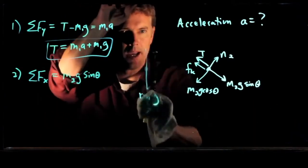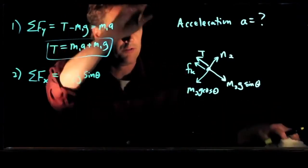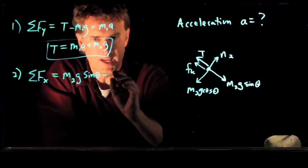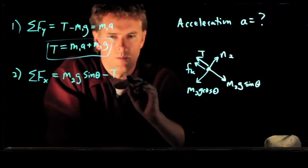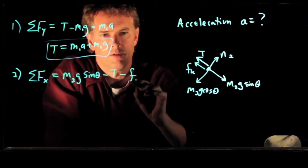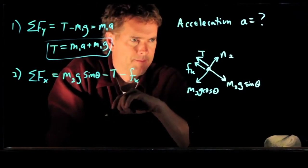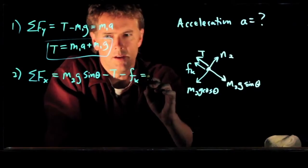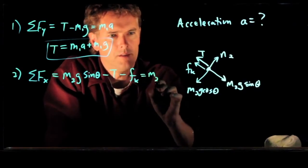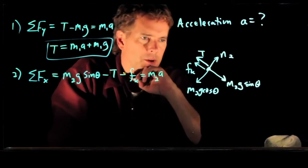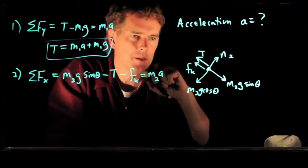So the x direction means positive x is down to the right. So we have M2g sine theta. And then we have two that are opposing that. We have tension T, and we also have frictional force Fk. And all of that is equal to the mass times its acceleration. We said it's going to accelerate down the plane.